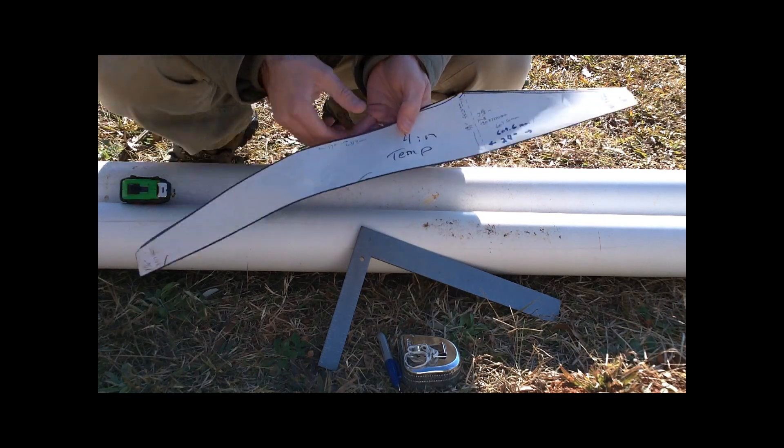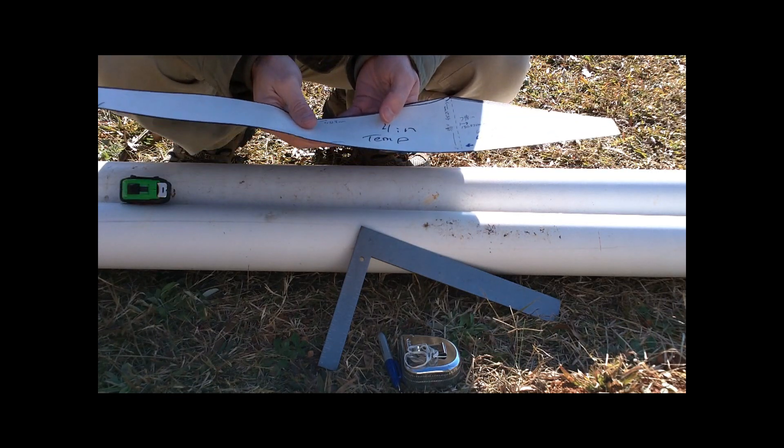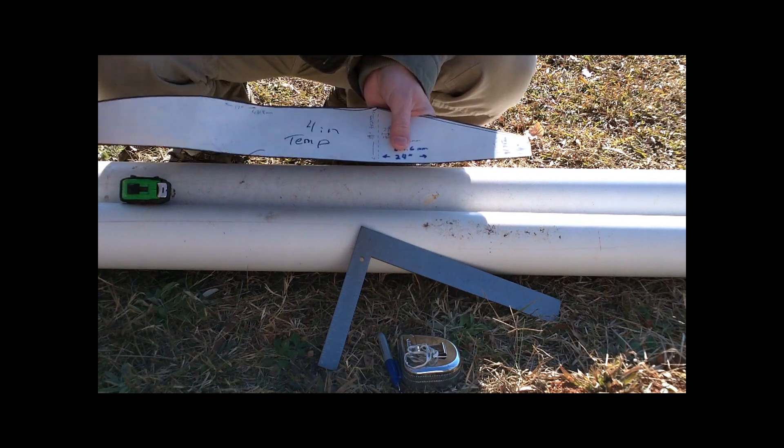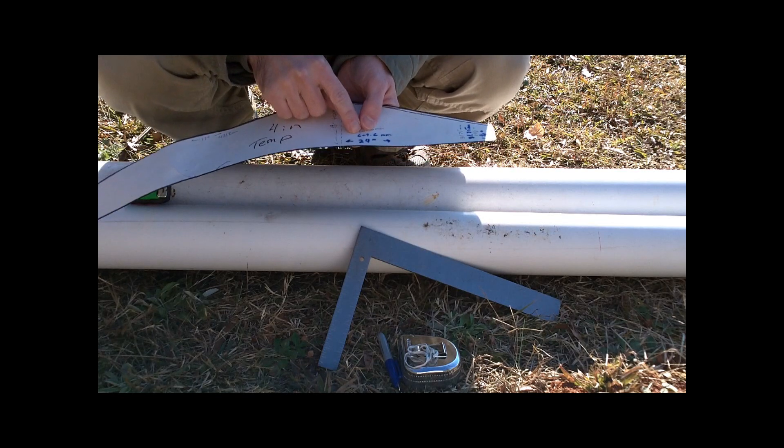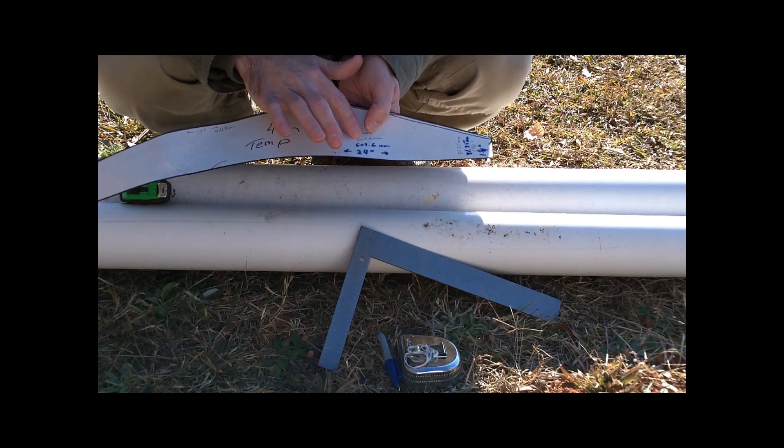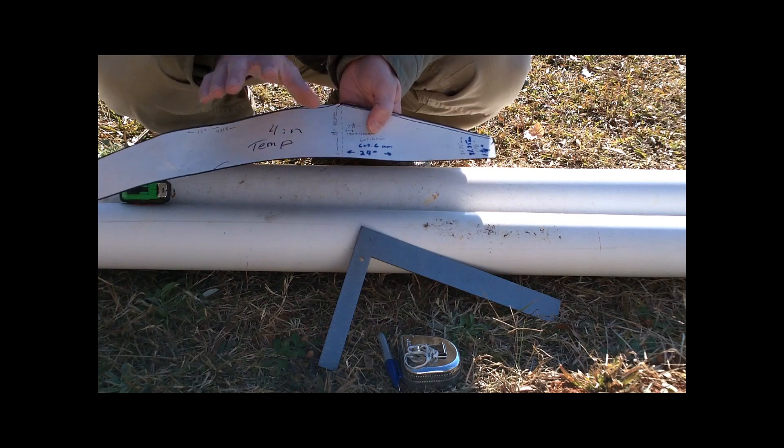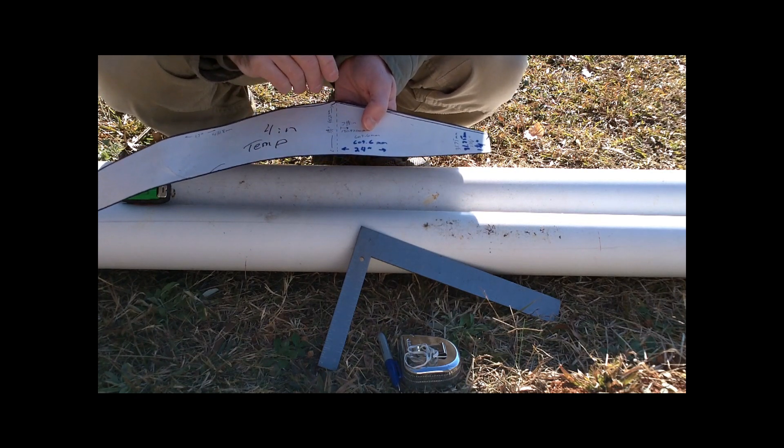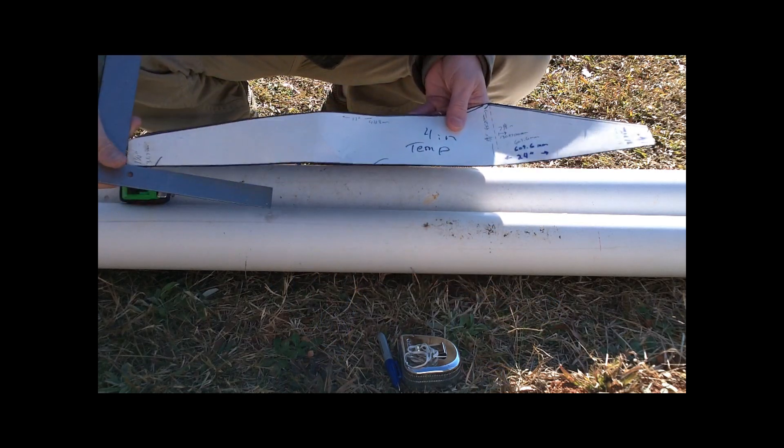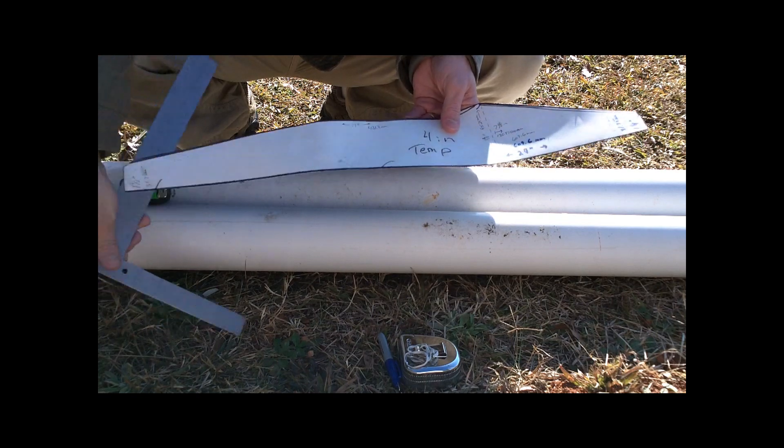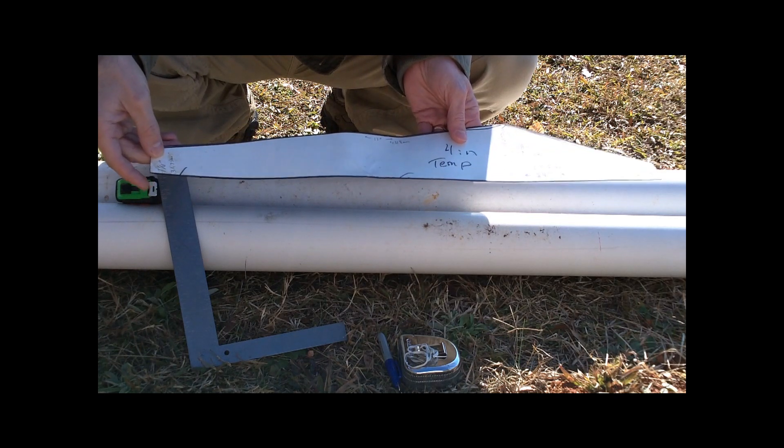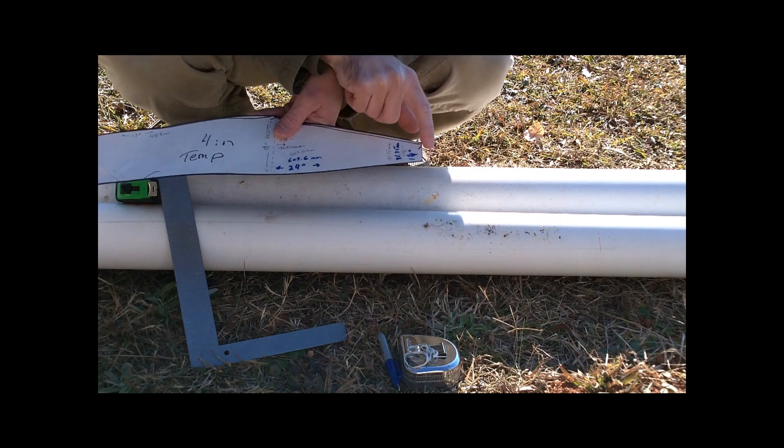I start with a piece of poster board with a straight line across the bottom, 24 inches from end to end, or 609.6 millimeters. From each end, I made a 90-degree angle coming up. That 90-degree line is 1 and 1/4 inch or 31.75 millimeters on both sides.